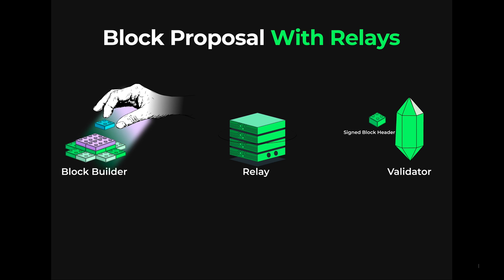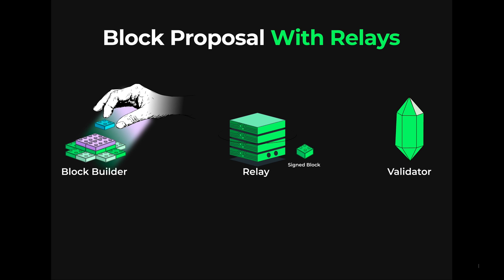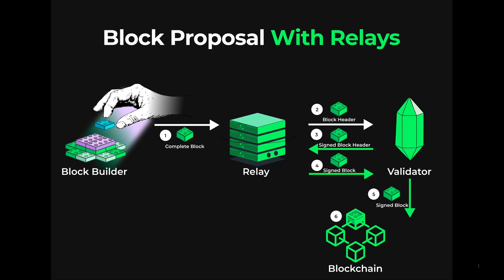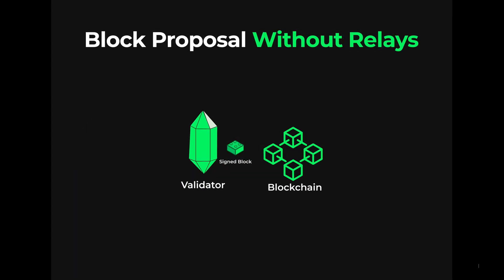The signed block header is sent back to the relay. The relay then releases the full block to the validator after it's signed. The signed block is then proposed to the Ethereum blockchain. This is what a block proposal process looks like with relays involved. Let's compare this to the block proposal process without a relay. This is what the block proposal process looks like without a relay involved.